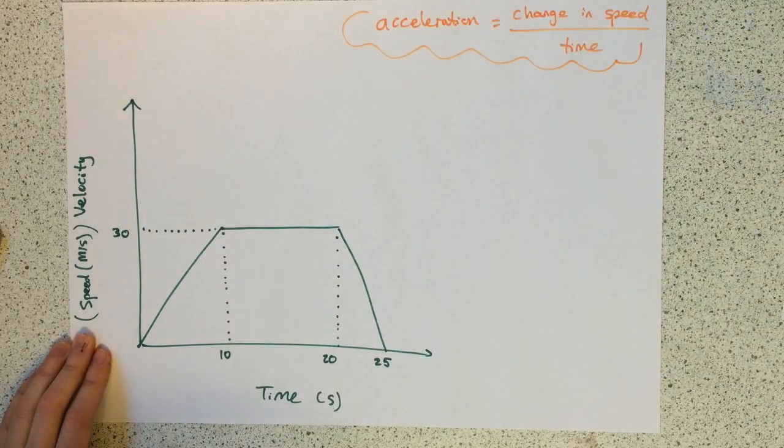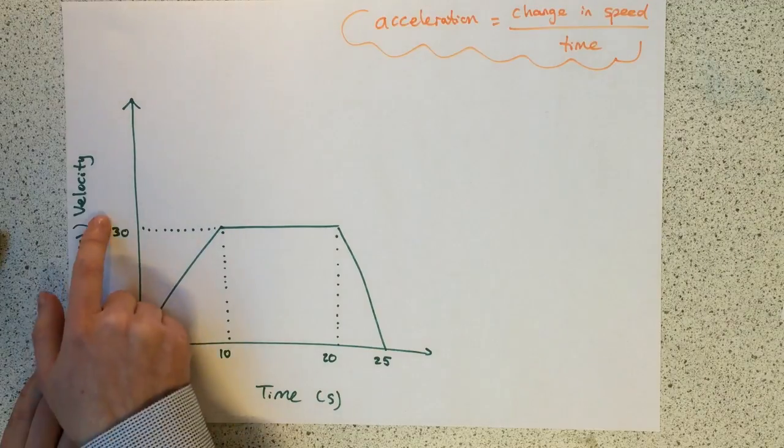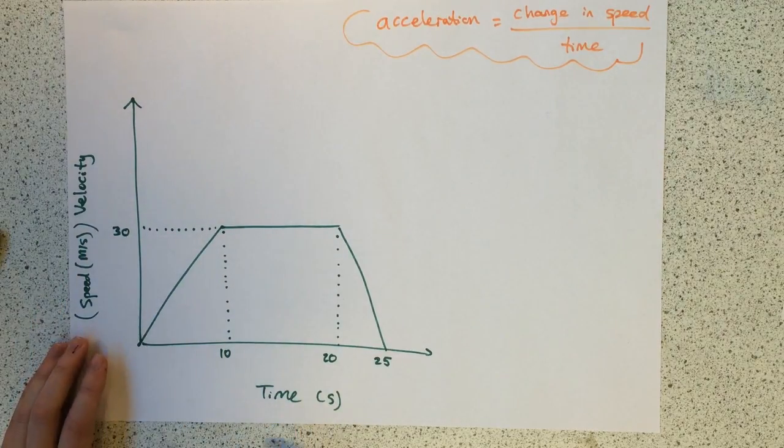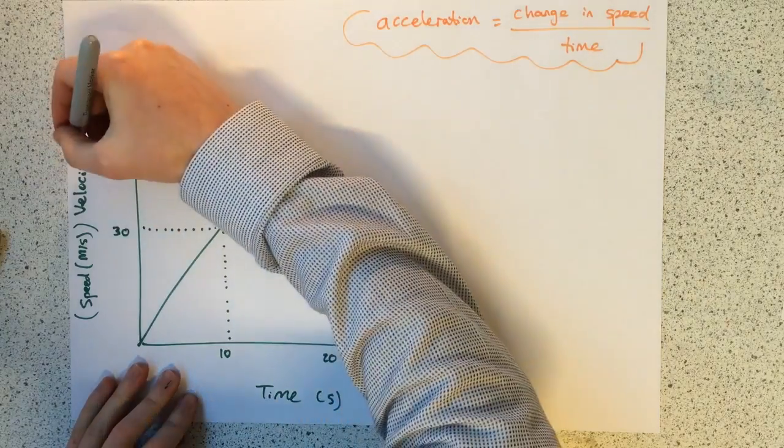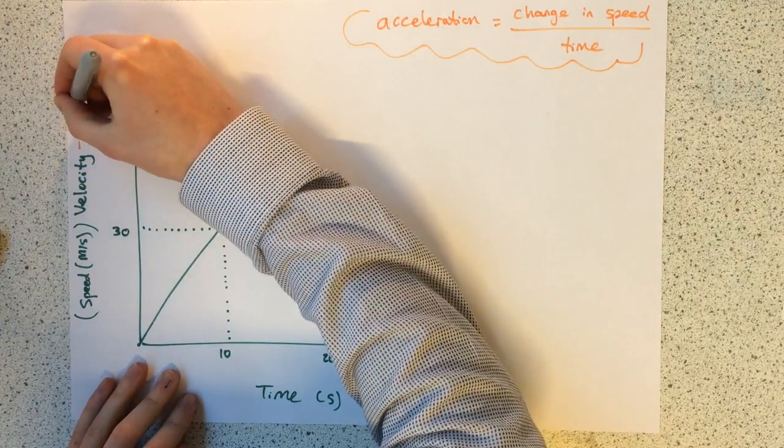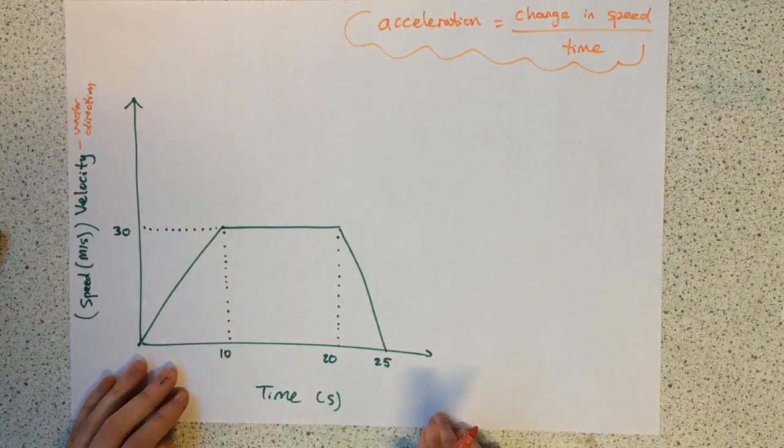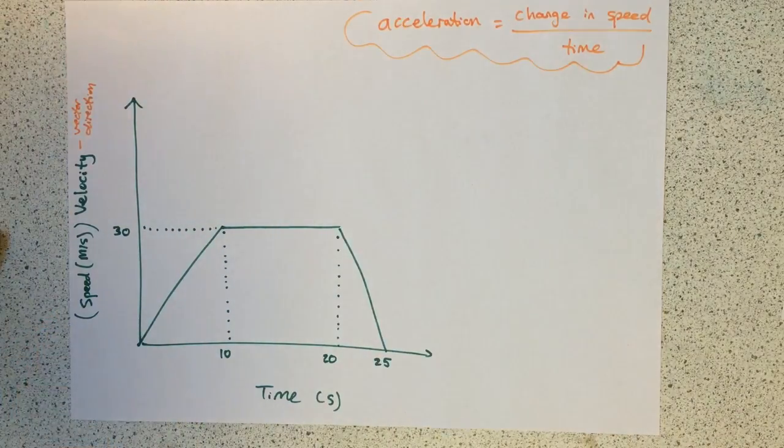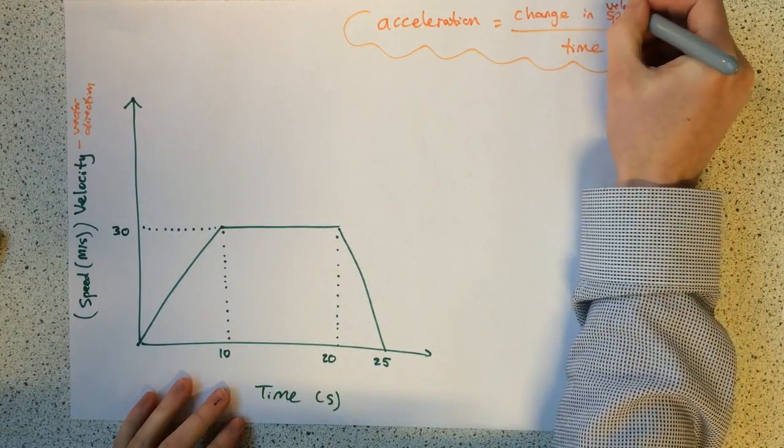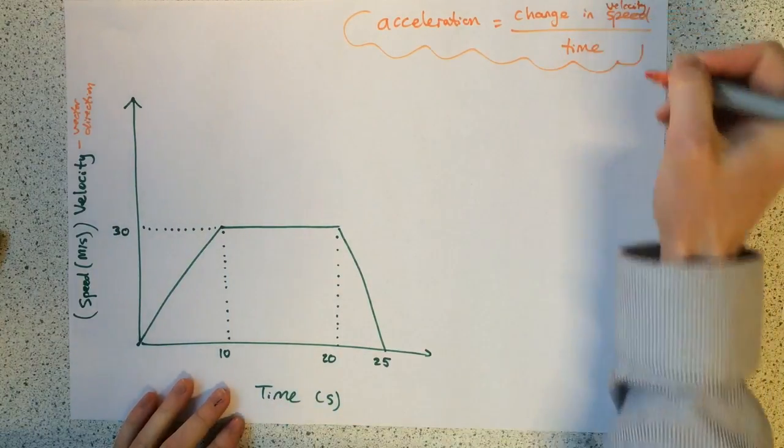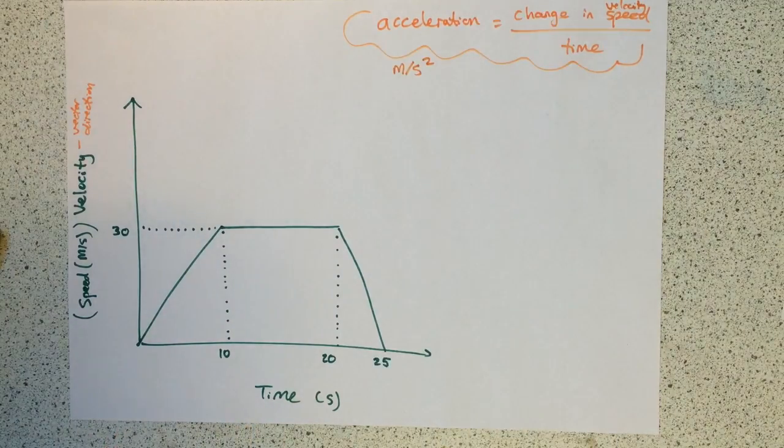We're now going to look at speed-time graphs, but more accurately they should be called velocity-time graphs because it's got a direction, so this is a vector with direction. Now acceleration is the change in speed or change in velocity divided by time. Acceleration is measured in metres per second squared.